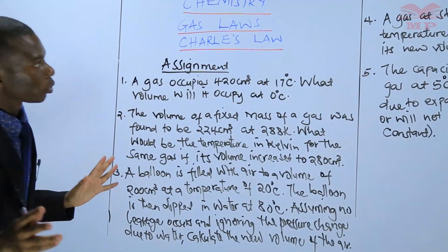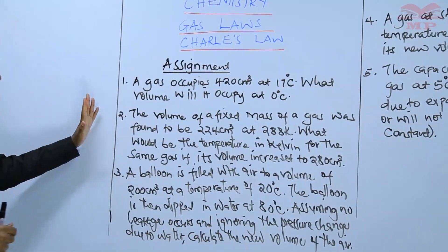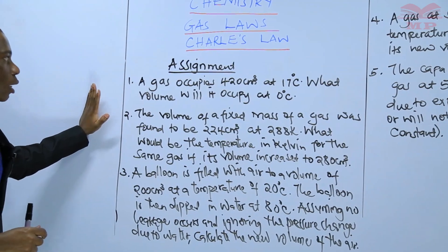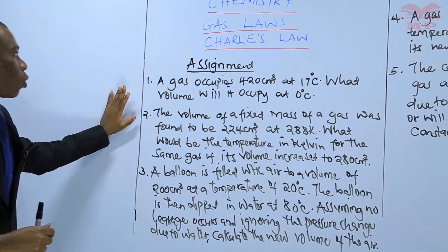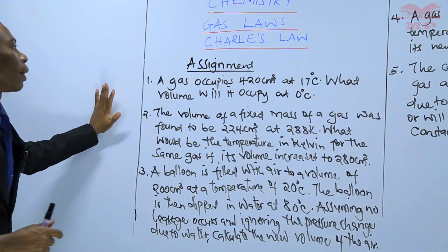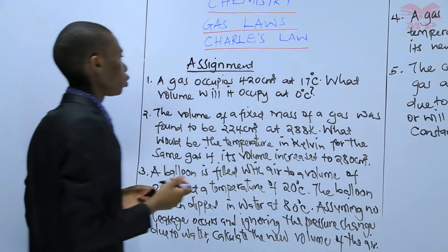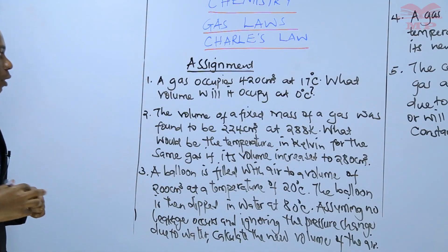We have five questions. We have the first one. A gas occupies 420 centimeters cubed at 17 degrees Celsius. What volume will it occupy at 0 degrees Celsius?